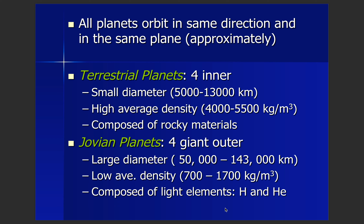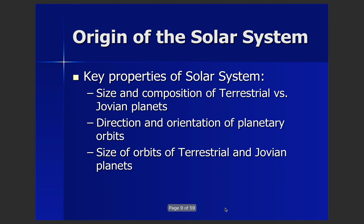The Jovian planets are larger in diameter, lower in their average density, and composed of lighter elements like gases such as hydrogen and helium, and various forms of ices. To understand the origin of our solar system, it's important to understand its key properties. The size and composition of the terrestrial and Jovian planets are different, but the direction and orientation of orbits are all the same. Terrestrial planets have smaller orbital sizes and Jovian planets have larger orbital sizes.